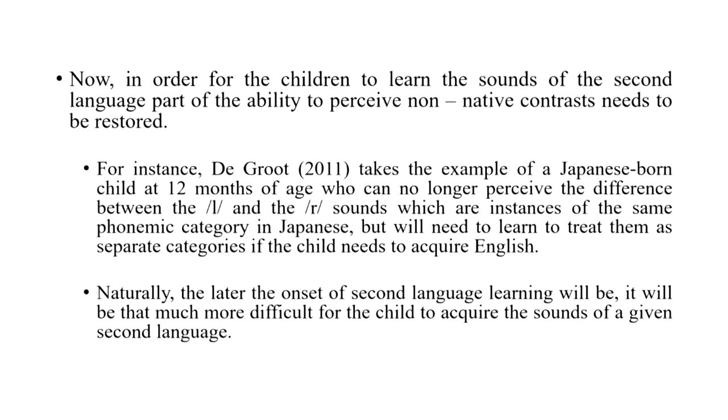In this instance, de Groot takes the example of a Japanese-born child at 12 months of age who could no longer perceive the difference between the 'le' and 're' sounds, which are instances of the same phoneme in Japanese, but are treated as separate categories in English. Obviously, the later the onset of second language learning, the more difficult it will be for these children to acquire the sounds of a given second or third language.